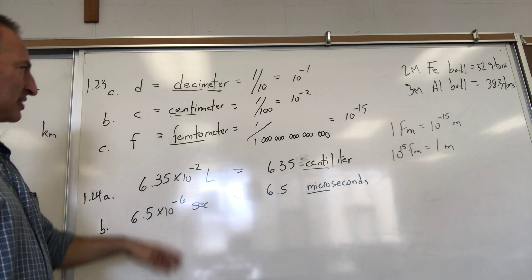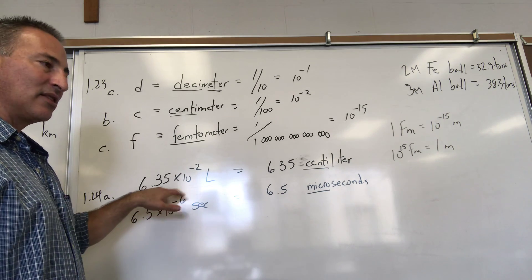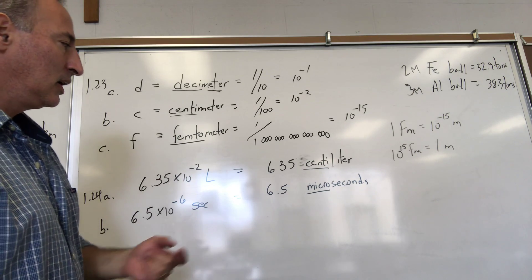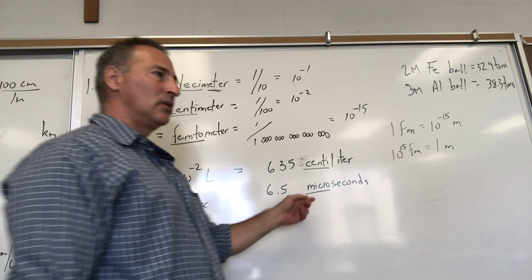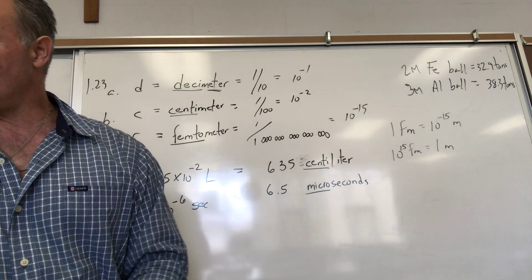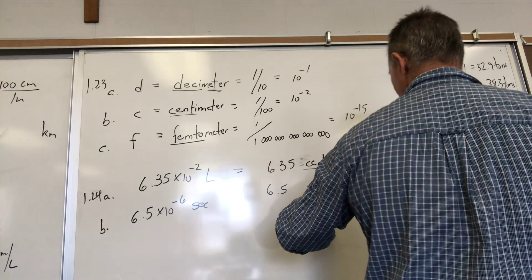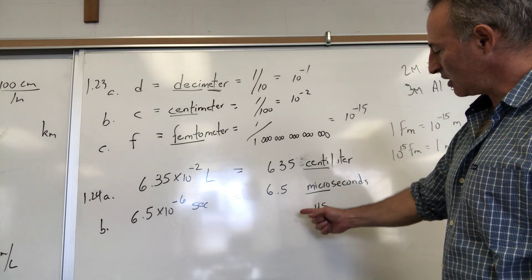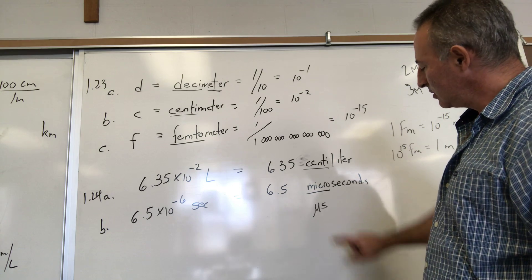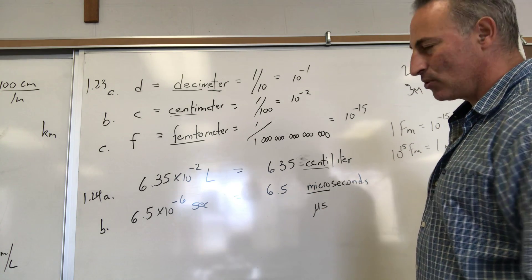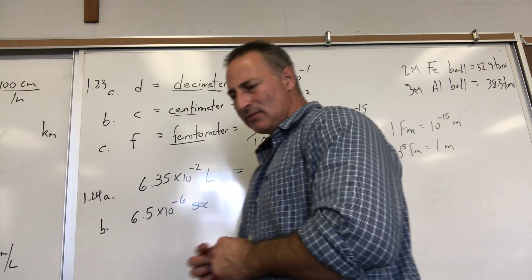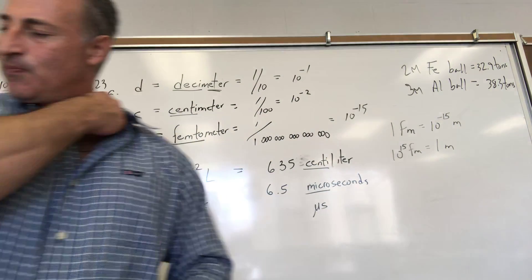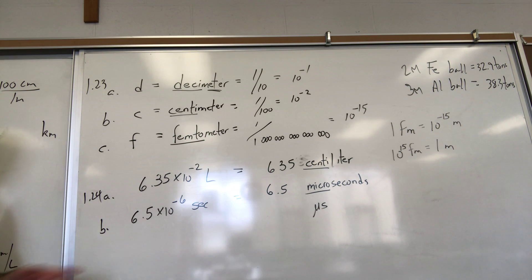6.5 times 10 to the minus 6—10 to the minus 6 is a millionth of something. The prefix for that is micro. Sometimes they symbolize micro with a u. You can say microseconds. It looks like a letter u with an extra long tail, a little u wearing a tuxedo. Microseconds gets used fairly frequently in science, especially when dealing with dilute solutions.